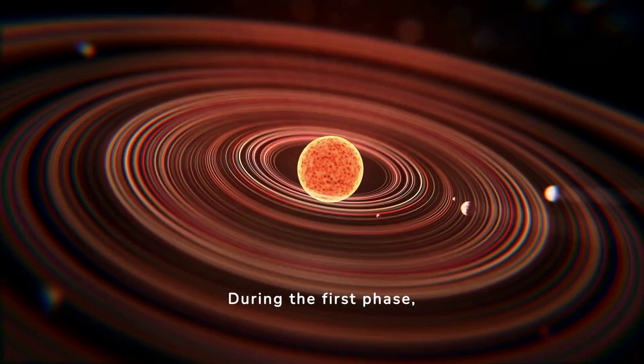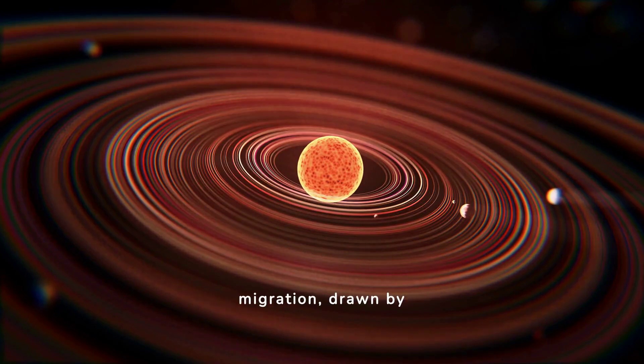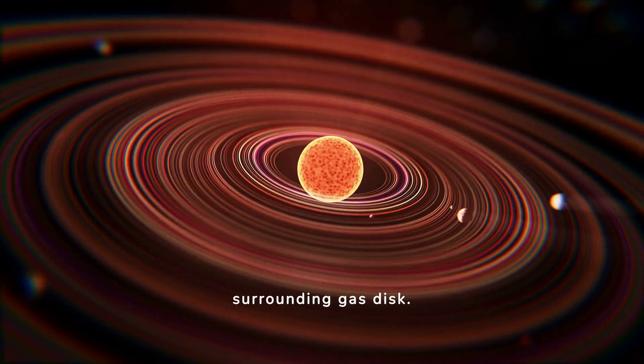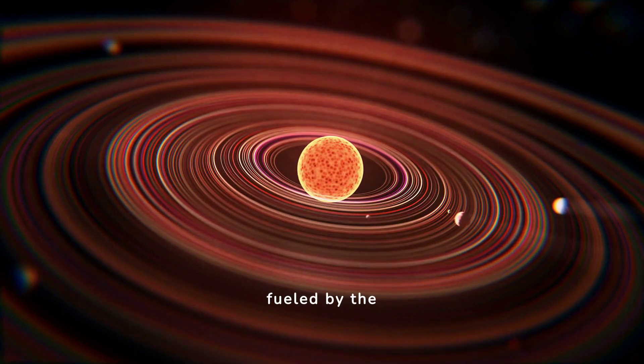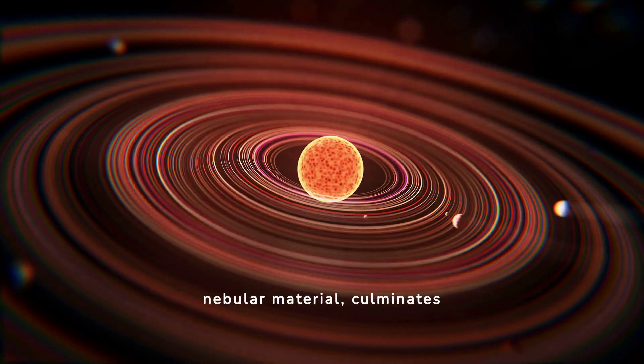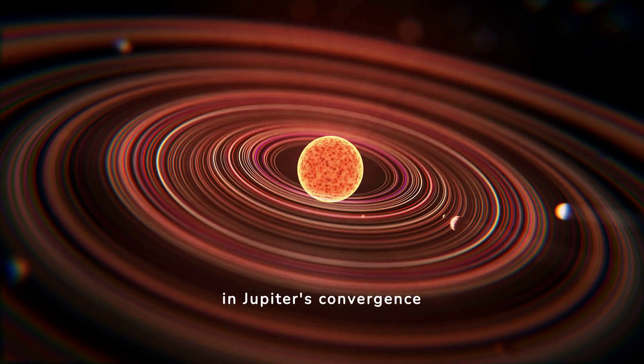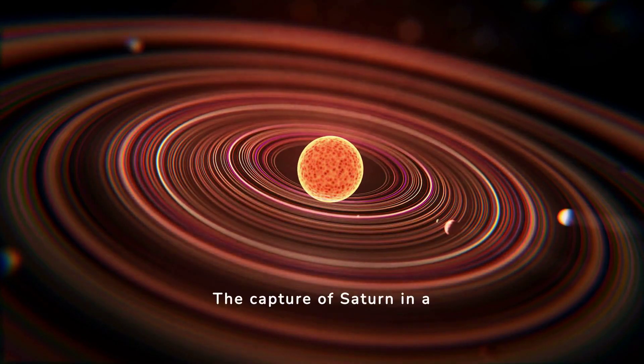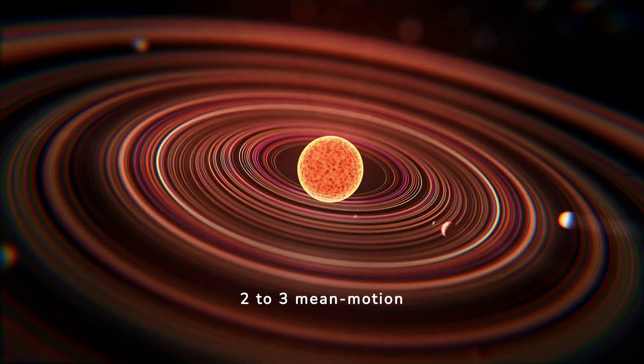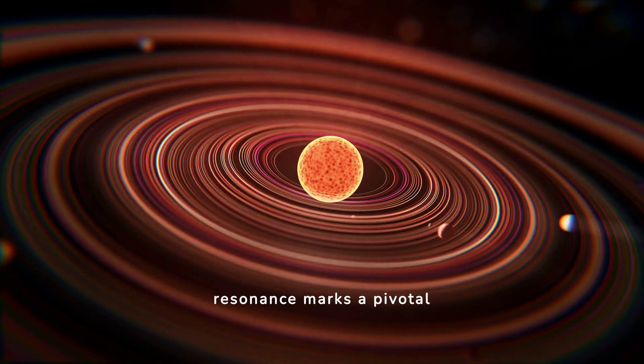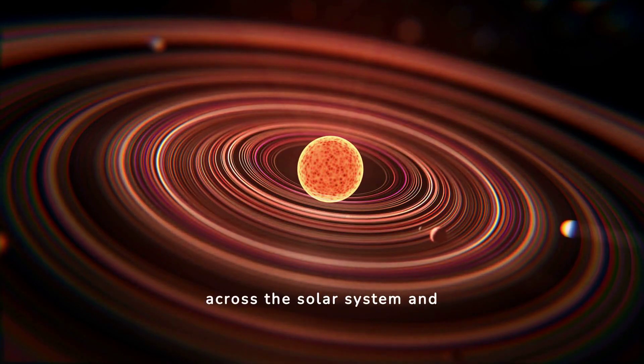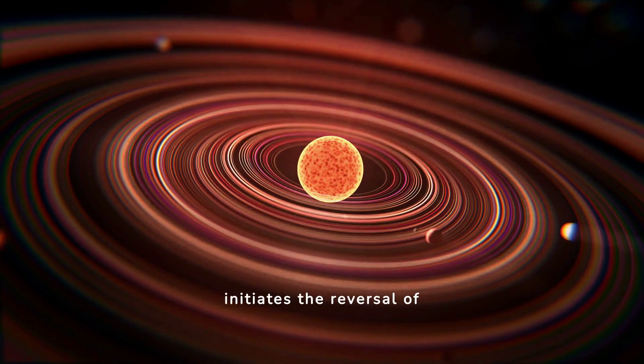During the first phase, Jupiter embarks on an inward migration, drawn by the subtle currents of the surrounding gas disk. This migration, fueled by the gravitational interactions with the nebular material, culminates in Jupiter's convergence with its celestial counterpart, Saturn. The capture of Saturn in a 2-3 mean motion resonance marks a pivotal moment, a gravitational dance that reverberates across the solar system and initiates the reversal of Jupiter's course.